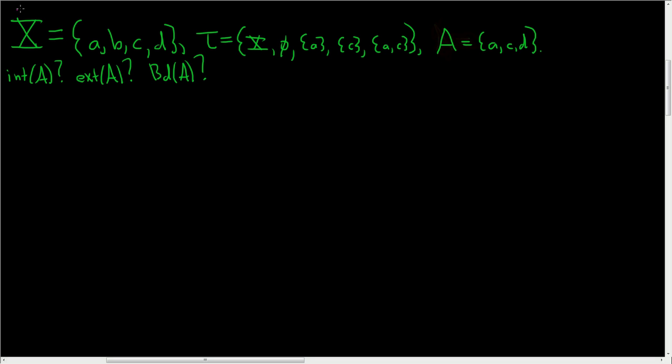We have a set X containing the points A, B, C, D. We have tau, that's a topology on X, and we have a subset A of X. We have to find the interior of A, the exterior of A, and the boundary of A.